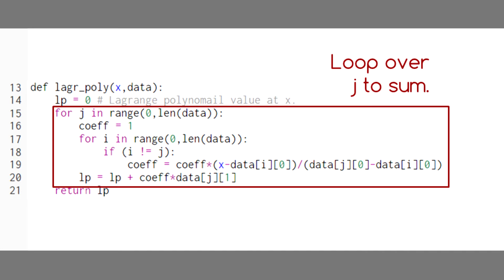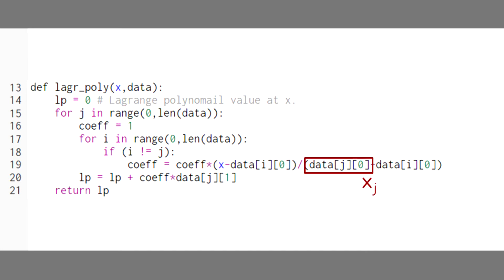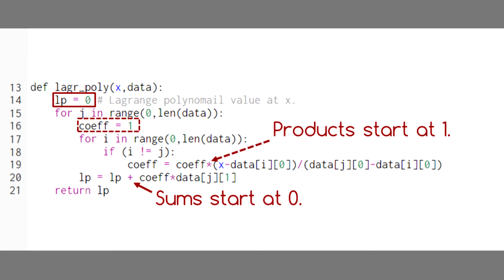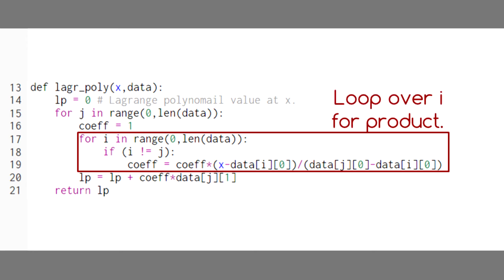Then we loop over j. This is the index at the x value we're currently subtracting from in the denominator. Then we initialize our current term to one. Notice that we initialize to zero for a summation, but we initialize to one for a product.